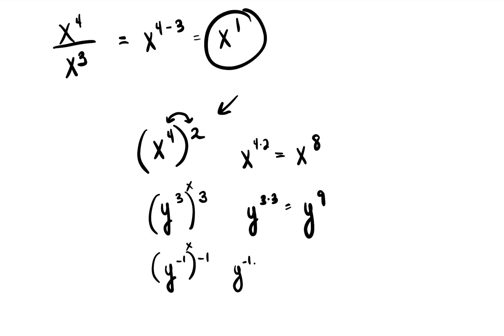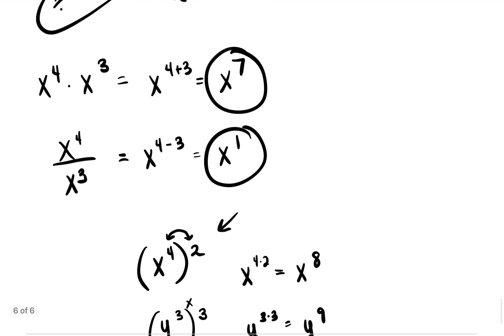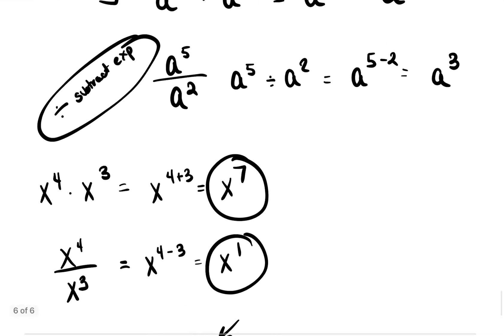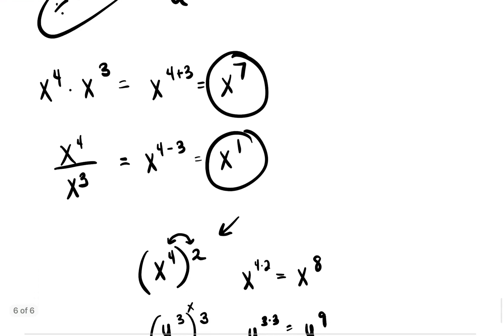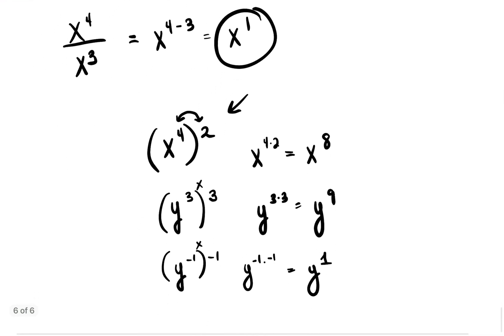What about y to the negative one power in parentheses with a negative one on the outside? Again, you multiply: y to the negative one times negative one. And negative one times negative one gives you y to the first power.